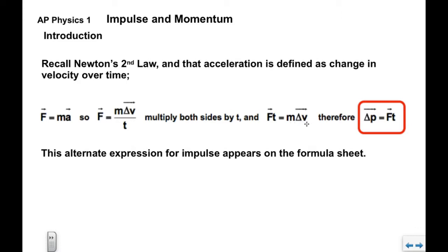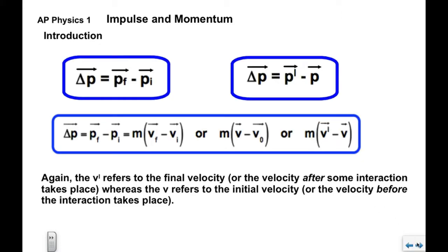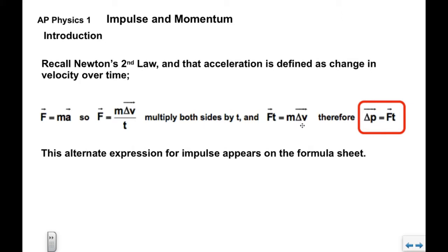Now, we know that M times delta V, that's the definition of impulse, which we saw here. So this M times delta V is the impulse.